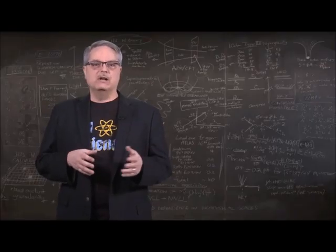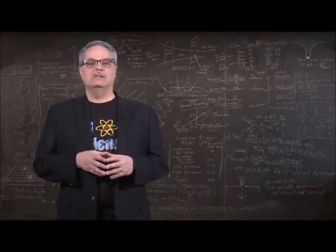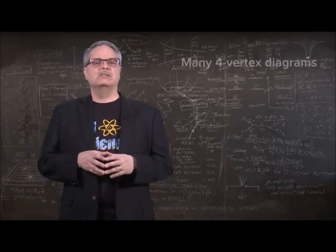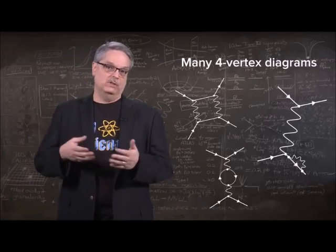Now, there are a couple of complications. For one thing, other details of the Feynman diagram can change slightly the conclusion you can draw just by counting vertices. Also, there are several pictures that have four vertices, and each of them adds 0.01%.